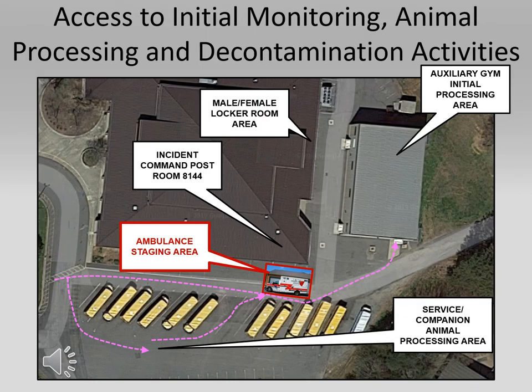This is an overhead view of the transfer area from the football field to the auxiliary gym, showing animal drop-off, incident command post, ambulance staging area, and male/female locker room areas. The magenta color shows the pathway for potentially contaminated individuals.